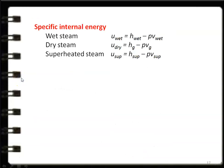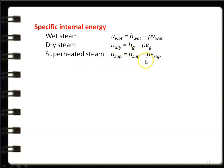Specific internal energy is calculated from the enthalpy relation H = U + PV, so U = H − P·V. For wet steam: U_wet = H_wet − P·V_wet. For dry steam: U_dry = Hg − P·Vg. For superheated steam: U_super = H_super − P·V_super. These are the four important properties required for steam calculations.